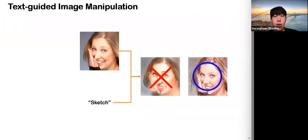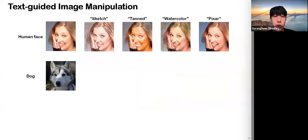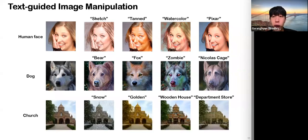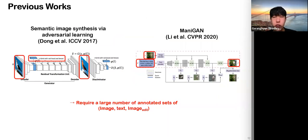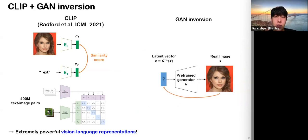In this work, we deal with a text-driven image manipulation task. The manipulated image should strongly correspond to the target text, as well as preserve identities without unintended changes. Also, the framework should support diverse types of text prompts and diverse types of image domains. Several works are proposed for this, but require a large number of annotated sets of image, text, and manipulated images.